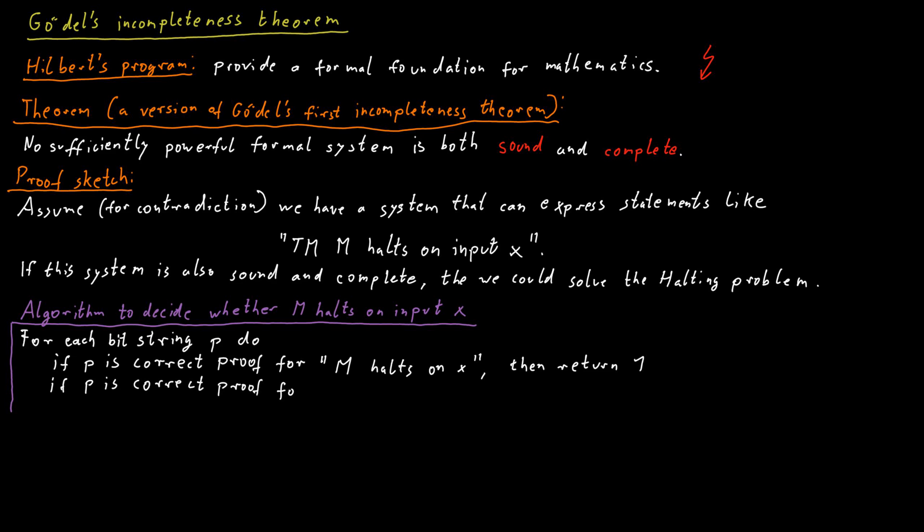On the other hand, if we encounter a bit string that we can check is a valid proof for M does not halt on X, then we return 0.